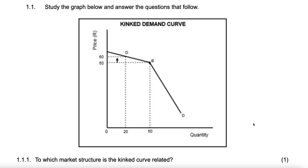It says here: study the graph below and answer the questions that follow. As we study the graph, we see this is a kinked demand curve, and there's only one market structure with kinked demand curves, and that is oligopoly.